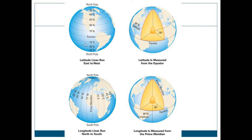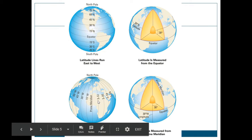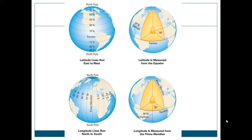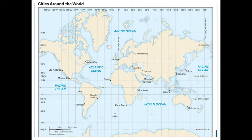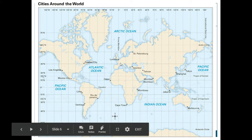Here we go. These lines show you latitude — the equator being 0, going all the way up to the north pole at 90 degrees north latitude, all the way down to the south pole at 90 degrees south latitude. And then here you have the prime meridian at 0 degrees longitude, 15 degrees east, 30 degrees east. This is the eastern hemisphere over here because it has E after it, and this is the western hemisphere over here because it has a W after it.